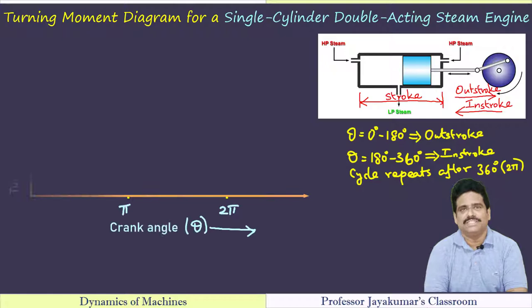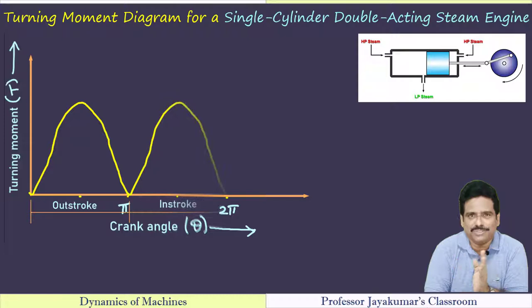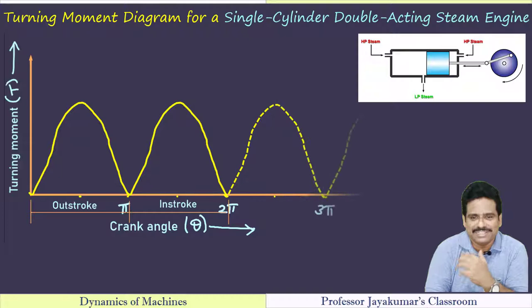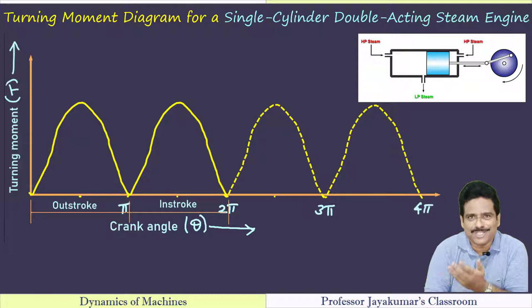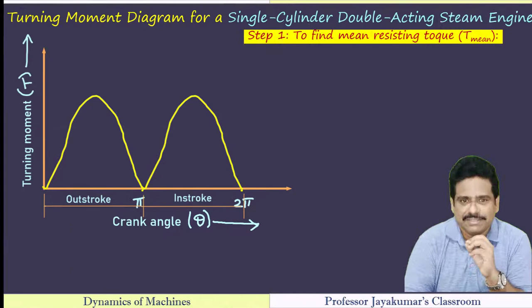We can now draw the turning moment diagram. It will look like a curve: 0 to π is the out-stroke, and π to 2π (180° to 360°) is the in-stroke. The cycle keeps repeating, as shown by dotted lines. It is enough to draw the turning moment diagram for one cycle. The first purpose is to find the mean resisting torque. Let me introduce a term: work done per cycle. For linear motion, work done equals force times displacement. For angular motion, we replace force with torque and displacement with angular displacement θ — so work done is T × θ.